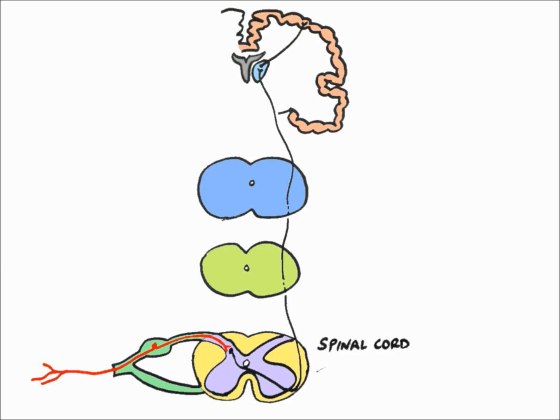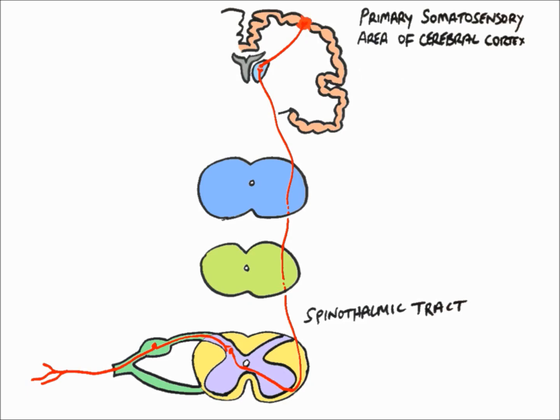This second-order neuron decussates, or crosses the spinal cord, at this level, before entering the spinothalamic tract and rising through the medulla, the periaqueductal gray of the midbrain, and then synapses with a third-order neuron within the thalamus. This third-order neuron then continues on, ending at the primary somatosensory region of the cerebral cortex.